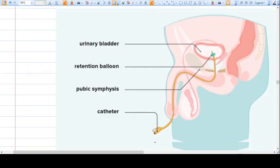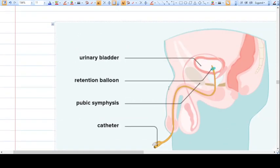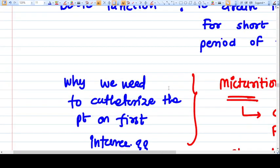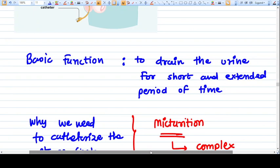Now we'll go from the very basics. What is the basic function of any type of catheter? The basic function is to drain the urine for short or extended periods of time.